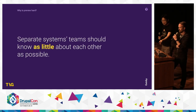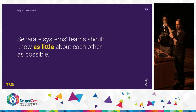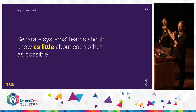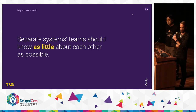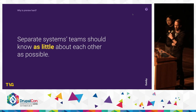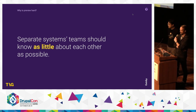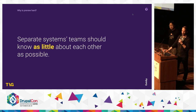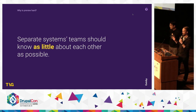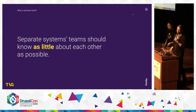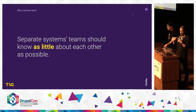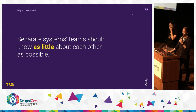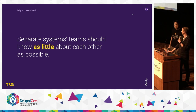Part of the reason that people decouple is so that you have a separation of concerns, so you can have your back end and your front end with their own feature velocity and different development teams working independently. One of the goals is that teams need to know as little about each other's systems as possible, so your Drupal folks can focus on the Drupal build and your Gatsby or front-end folks can focus on building that out.